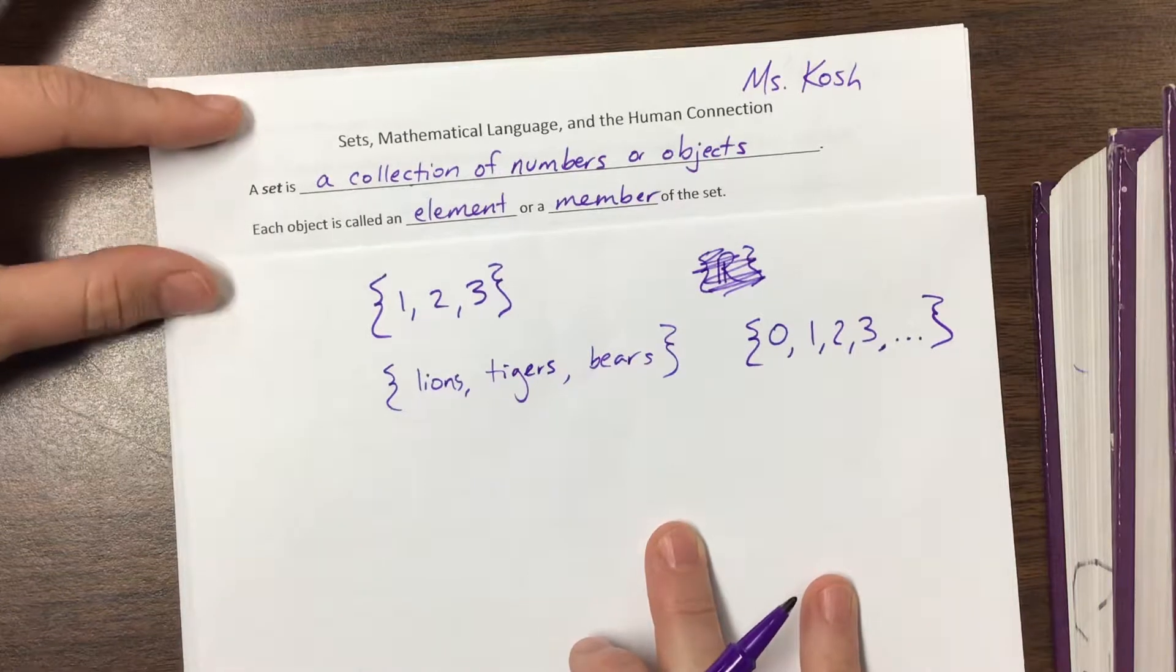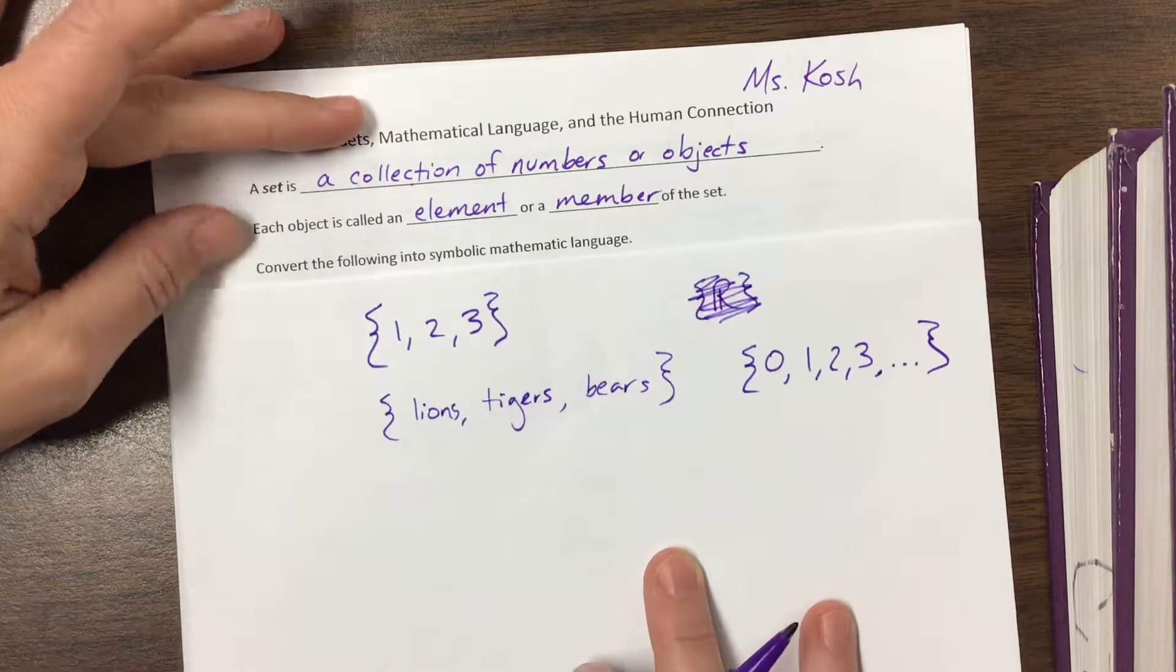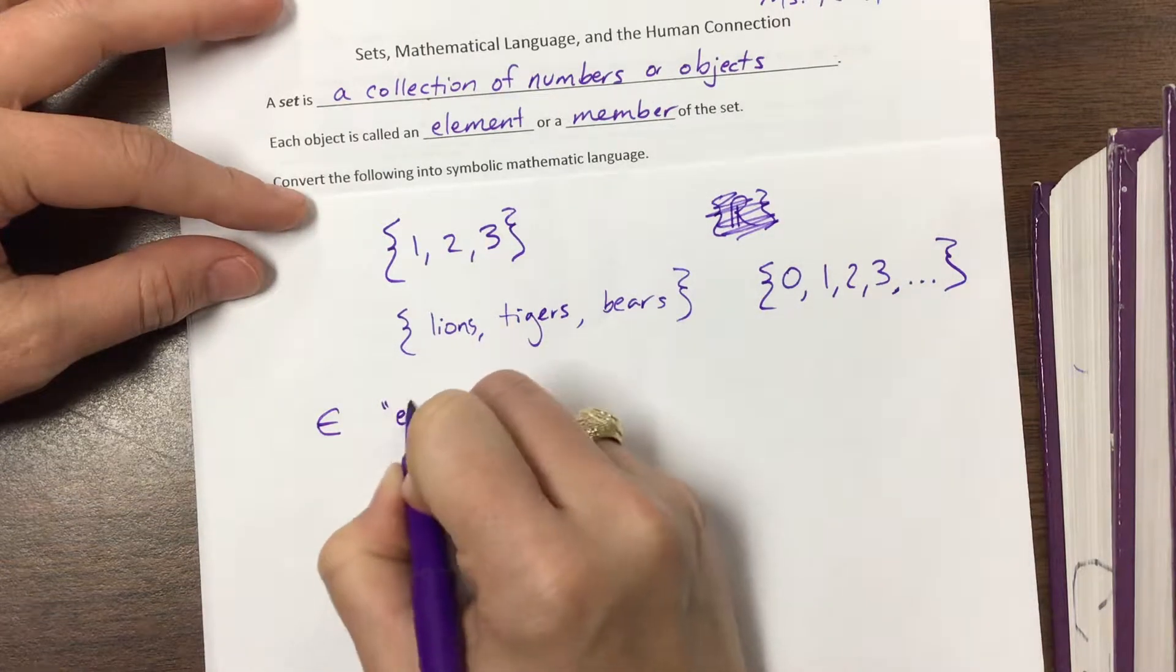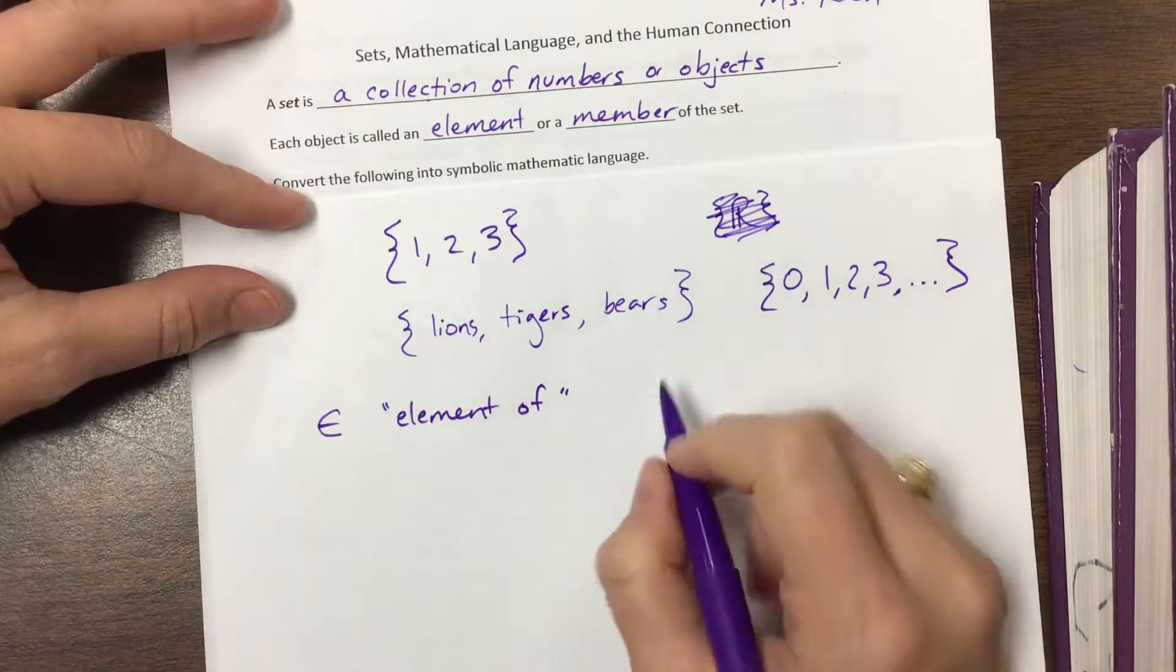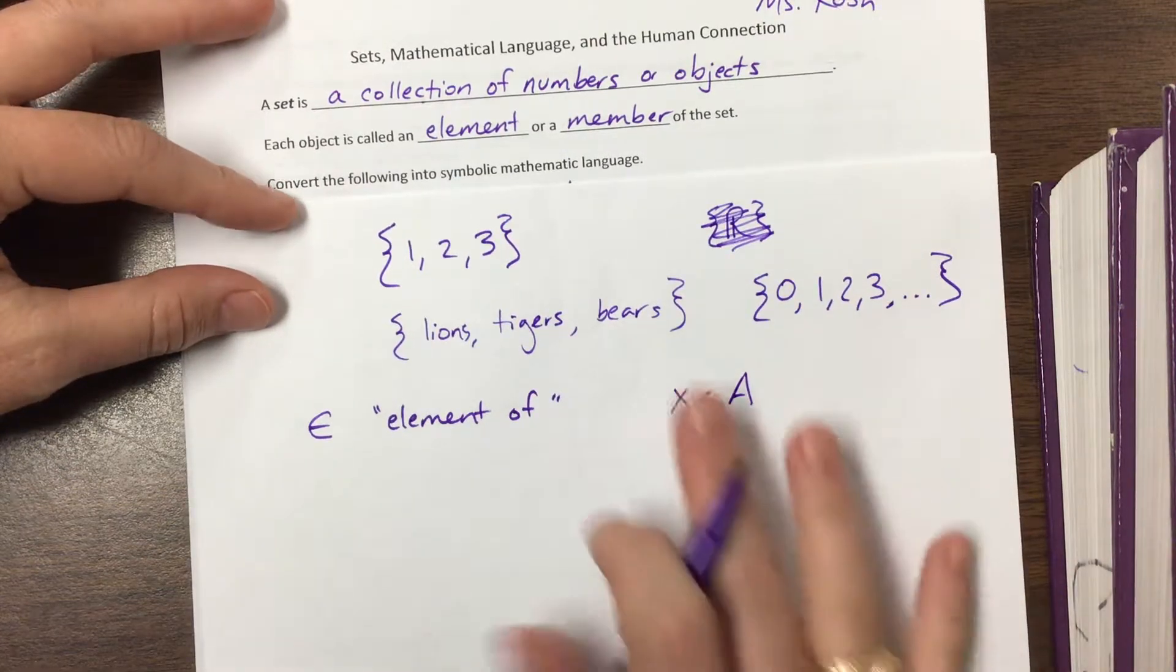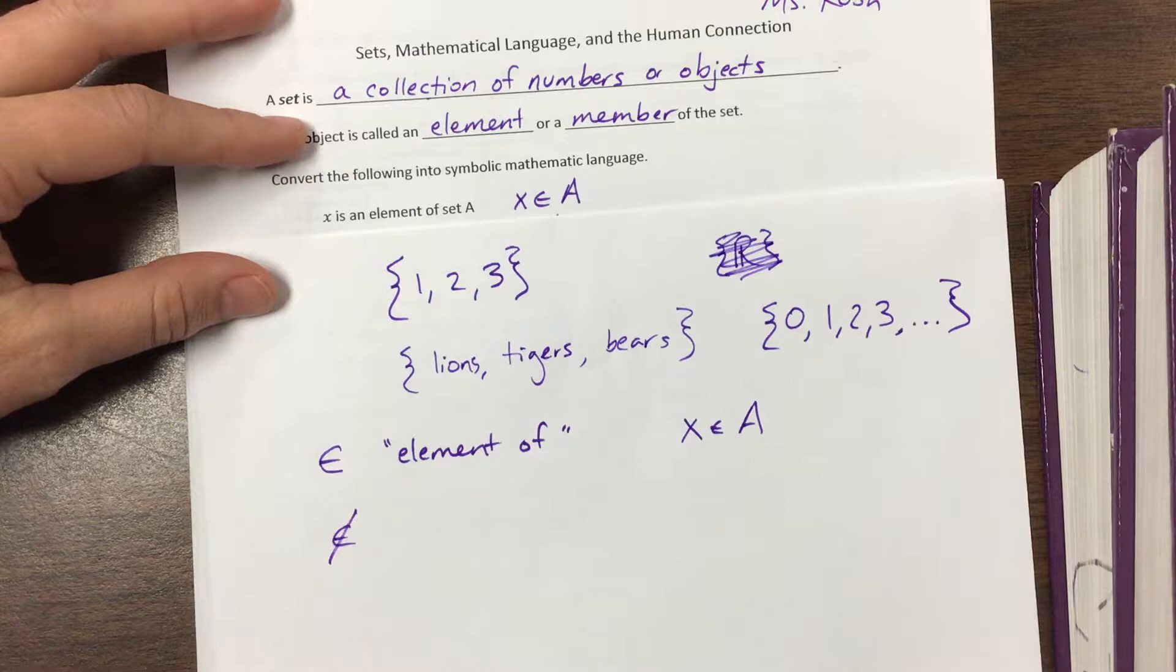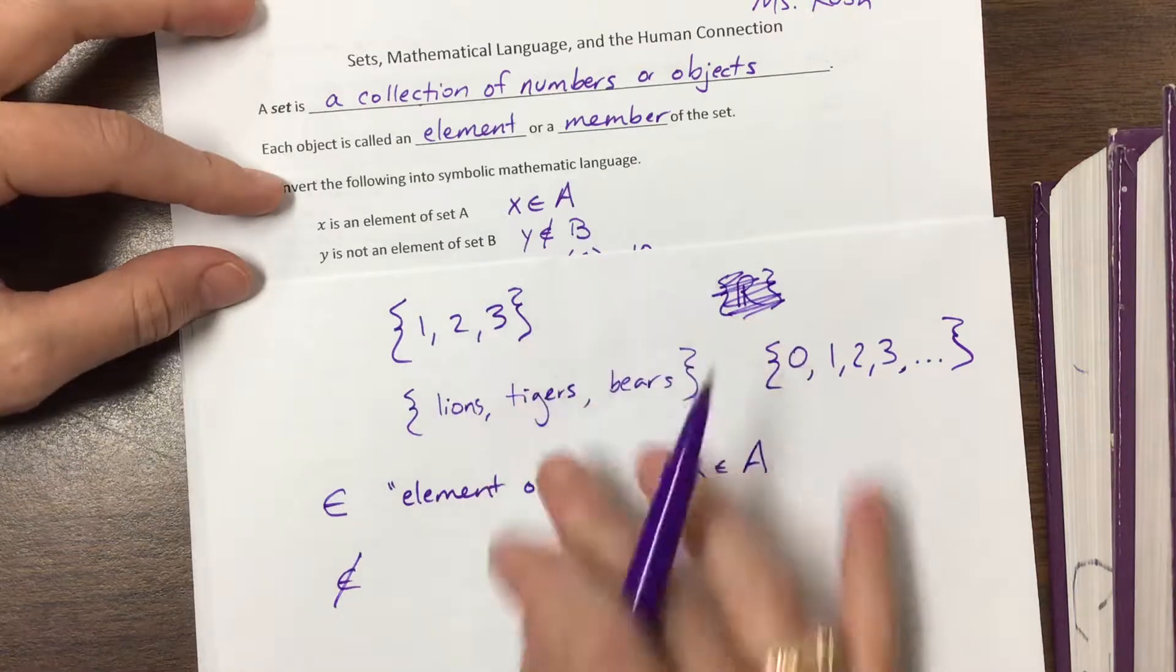So each object is called an element or a member of the set. When we talk about something as an element of the set, this term right here, it looks like a little fancy E. This means element of. So if I were to say X is an element of set A, that means X is an element of A. If it's not an element of, then we're going to take that element symbol and cross it out. So we see here Y is not an element of B.